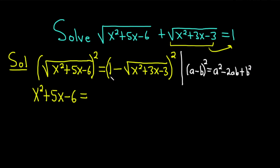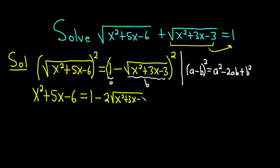In this particular example, our a is going to be 1, and our b is going to be the square root of x squared plus 3x minus 3. Squaring the first gives 1 squared, which is 1. Then minus 2 times the square root of x squared plus 3x minus 3. Then you put a plus sign and square the last term — the square root goes away — so you just get x squared plus 3x minus 3.